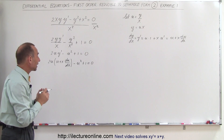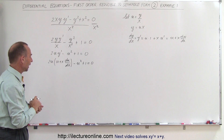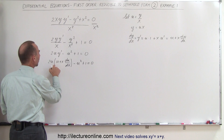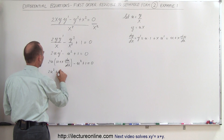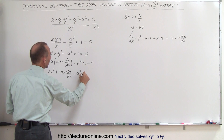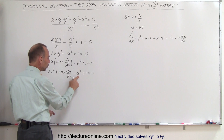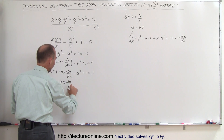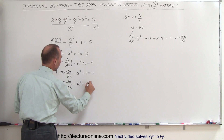Now we have a situation where we can actually separate the variables u and x, integrate, and then substitute back from u to y over x. First, we get rid of the parentheses and write this as 2u squared plus 2u·x·du/dx minus u squared plus 1 equals 0. We combine the 2u squared minus u squared to get 2u·x·du/dx equal to u squared plus 1 equals 0.